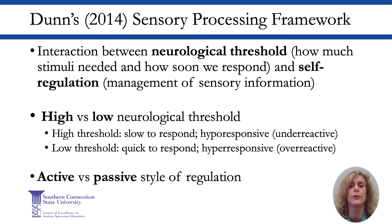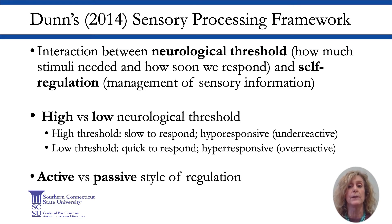Winnie Dunn provides an excellent framework to understand the interaction between neurological threshold — how soon we respond to sensory stimuli — and self-regulation, our ability to manage sensory information. For students with a high neurological threshold, they may respond more slowly to stimuli and tend to be hypo-responsive, needing a lot of sensory stimuli for registration. These students may appear passive or lethargic and may not notice sensory cues around them. For students with a low neurological threshold, they may respond more quickly and tend to be hyper-responsive, needing little sensory stimuli for registration. These students may display a fright, fight, or flight response to sensory experiences, or even sensory defensiveness, and may avoid sticky materials, playground equipment, or the cafeteria.